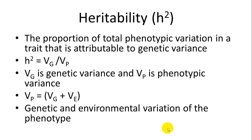When talking about evolution and traits, heritability is important. It is defined as the proportion of total phenotypic variation in a trait that is attributable to genetic variance. The equation is: H squared equals genetic variance divided by phenotypic variance, where phenotypic variance equals genetic variance plus environmental effects. As genetic variation goes up, the trait becomes more heritable; as environmental effects increase phenotypic variation, heritability decreases.